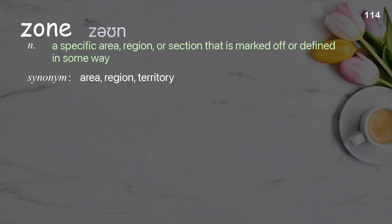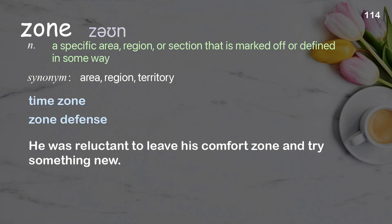Zone: a specific area, region, or section that is marked off or defined in some way. Examples: time zone; zone defense. He was reluctant to leave his comfort zone and try something new.